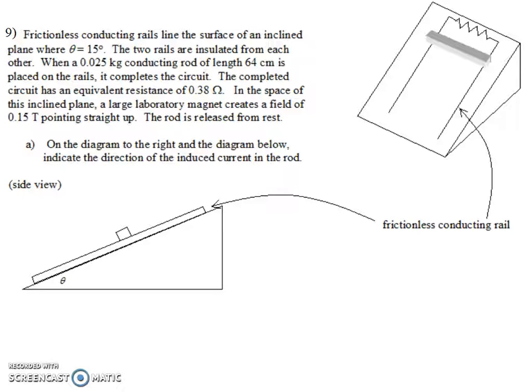Okay, so hopefully you recognize this is quite similar to a problem we've done in our notes just the other day where we had the conducting object falling in a uniform magnetic field. The difference is now it's on an inclined plane. So we're going to apply the same general ideas. I'll give you two different views of it. We have this sort of three-quarter perspective view and the side view. And our first job is to figure out the direction of the current in the rod.